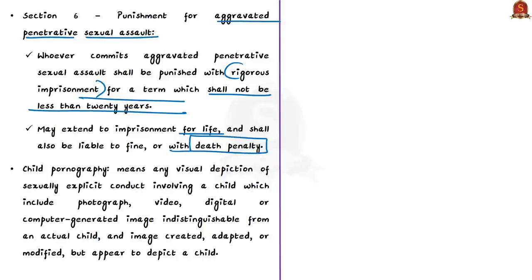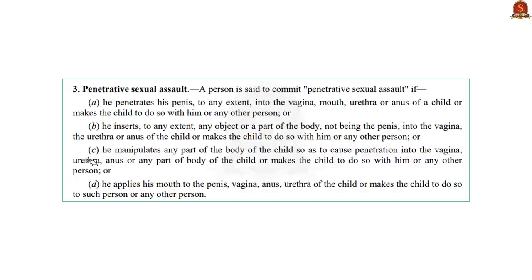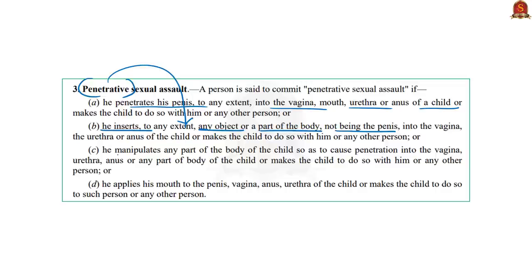Another important aspect is how the act defines penetrative sexual assault. Beyond the common understanding involving penile penetration into the vagina, mouth, urethra or anus of a child, the special feature of this law is that it includes object rape — that is, even inserting an object or a part of the body, though not a sexual organ such as a hand, into the child will be considered penetrative sexual assault. This is dealt with in Section 3 of the act.